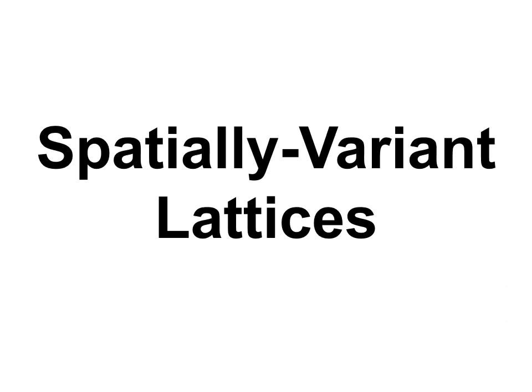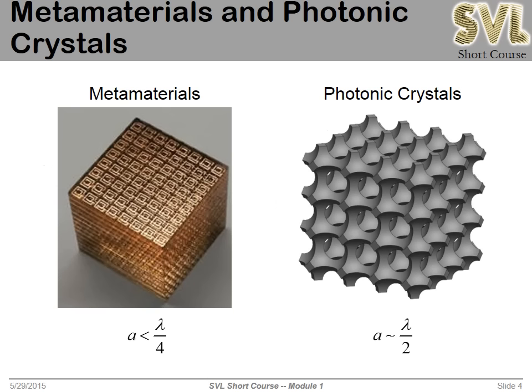Now, what is a spatially variant lattice? Right now in electromagnetics, metamaterials, metasurfaces, photonic crystals — all of these periodic structures are a very big deal. The periodic structure interacts with the electromagnetic field to produce amazing properties: negative refractive index has been demonstrated, super prisms using really strong dispersion, self-collimation effect, cloaking, invisibility — all enabled by periodic structures like metamaterials and photonic crystals.